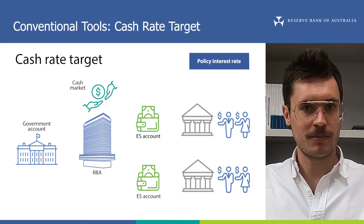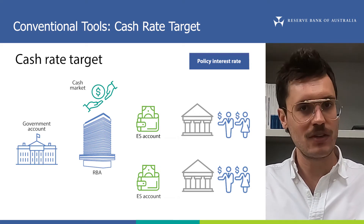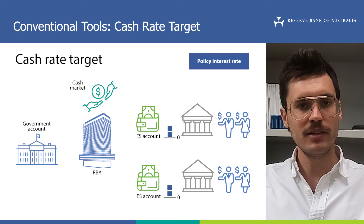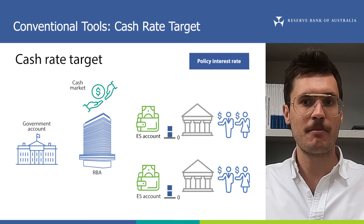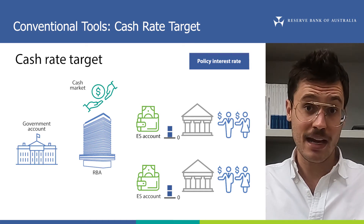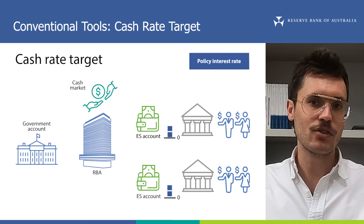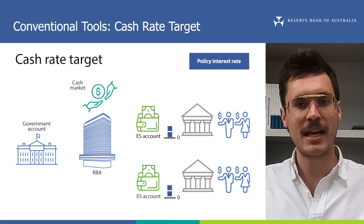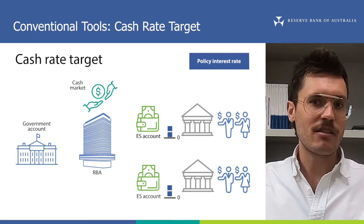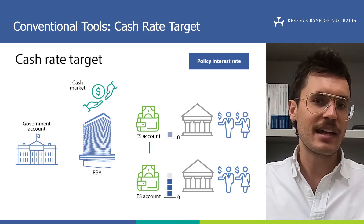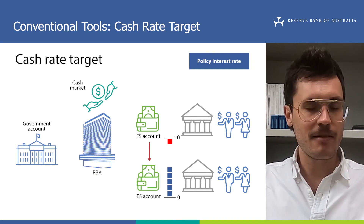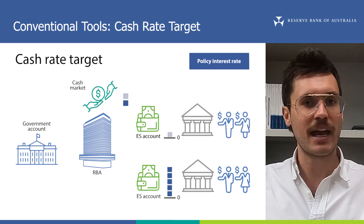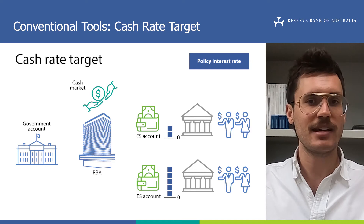So to make sure the system works properly, the RBA requires individual banks to always have a positive balance in their ES accounts. Only the RBA can create and remove ES balances from the banking system, which means that if banks need extra cash in their ES account or have too much, they can only borrow, lend or transact them with another bank or the RBA. So sometimes a bank may not have enough cash in their ES account, maybe because they needed to make a lot of payments to other banks on behalf of their customers. To fix this, a bank must go to the cash market and borrow cash overnight to deposit in its ES account.